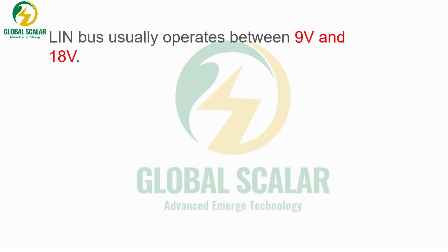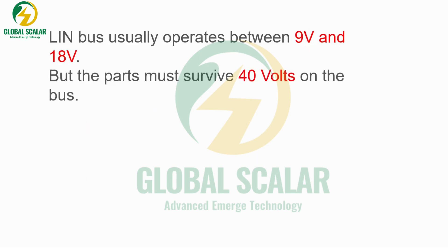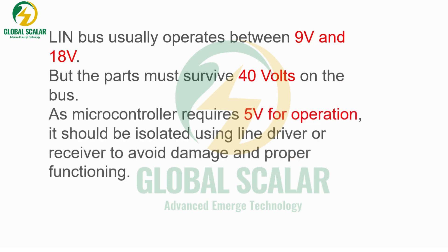Physically, the LIN bus operates with a voltage range of 9 to 18 volts and can survive up to 40 volts — above 40 volts the bus cannot hold. The microcontroller requires 5 volts for operation and is isolated using a LIN driver or receiver to avoid damage. When configuring LIN with a microcontroller, 5 volts is the normal operating voltage, with a maximum of 40 volts.